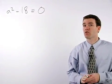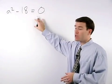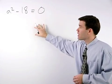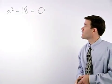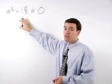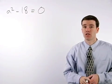In the past, we've solved quadratic equations by first setting the equation equal to zero, then factoring. Notice, however, that a squared minus eighteen does not factor, so we must use a different strategy here.